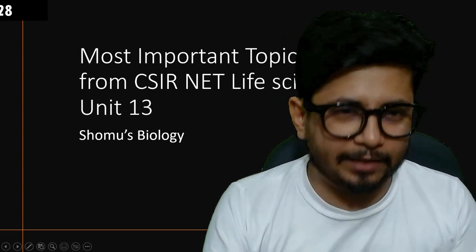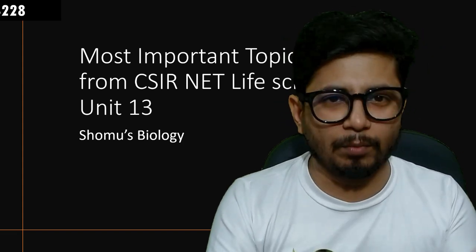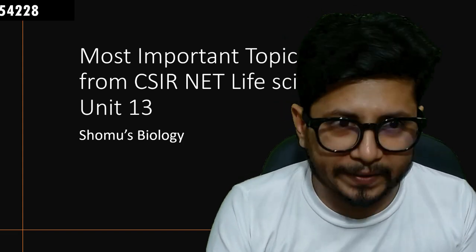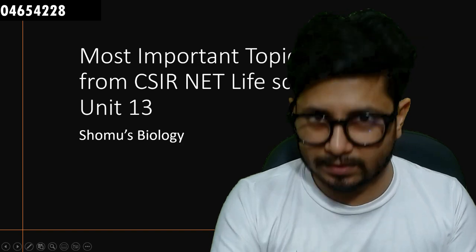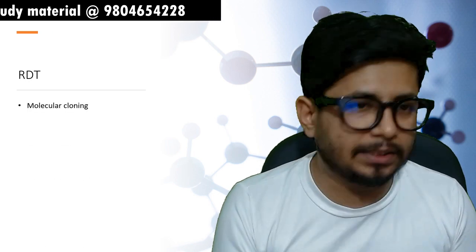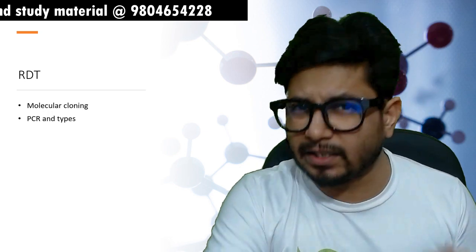Here you can see on my screen that we are going to discuss about the most important topic list from CSIR-NET Life Science Unit 13. The first technique we are going to talk about is RDT — recombinant DNA technology. In recombinant DNA technology, you need to go through molecular cloning methods and PCR and the types of PCR.